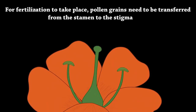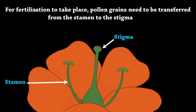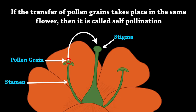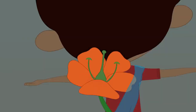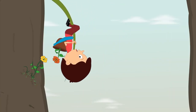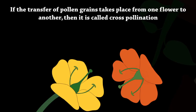For fertilization to take place, pollen grains need to be transferred from the stamen to the stigma. If the transfer of pollen grains takes place in the same flower, then it is called self-pollination. If the transfer of pollen grains takes place from one flower to another, then it is called cross-pollination.